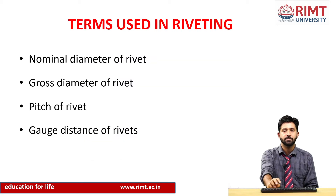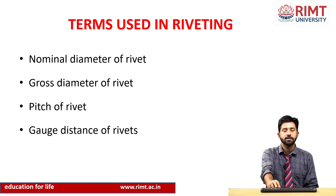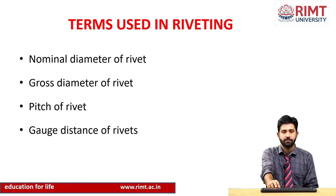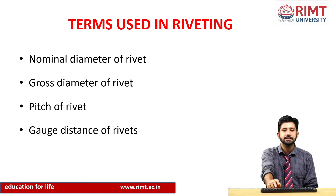Riveting is the process of joining two different members by means of rivets. Key terms used in riveted connections include: nominal diameter — the actual diameter of the rivet (e.g., 14 mm, 16 mm, 18 mm); gross diameter — the diameter of the hole into which the rivet is inserted; pitch — the center-to-center distance between two consecutive rivets in the direction of the applied force; and gauge distance — the center-to-center distance between rivets at right angles to the applied force.